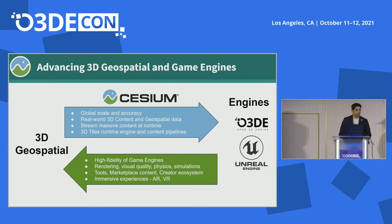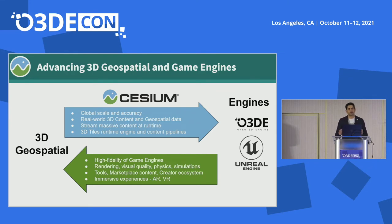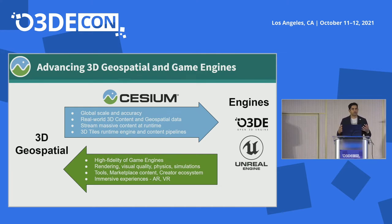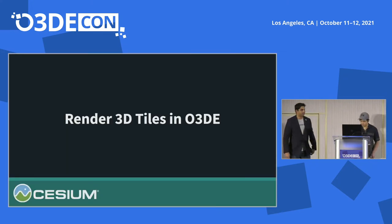My last slide before I hand it over to Bao for a technical deep dive: through Cesium Native and 3D Tiles, we are advancing both 3D geospatial and game engines. For the last three decades, both of these technologies have made tremendous advancements, but in parallel — they haven't really intersected. What we are doing is bringing them together so that each can take advantage of the other, and allow both communities to build amazing things together.